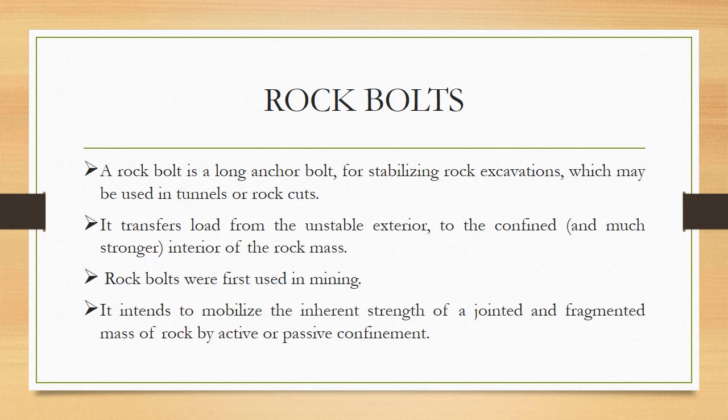The second method of ground inclusion is rock bolts. A rock bolt is a long anchor bolt for stabilizing rock excavations, which may be used in tunnels or rock cuts. It is able to transfer load from an unstable exterior to the confined interior of the rock mass. Rock bolts were first used in mining in about the 1890s, and they mobilize the inherent strength of jointed and fragmented rock by active or passive confinement.